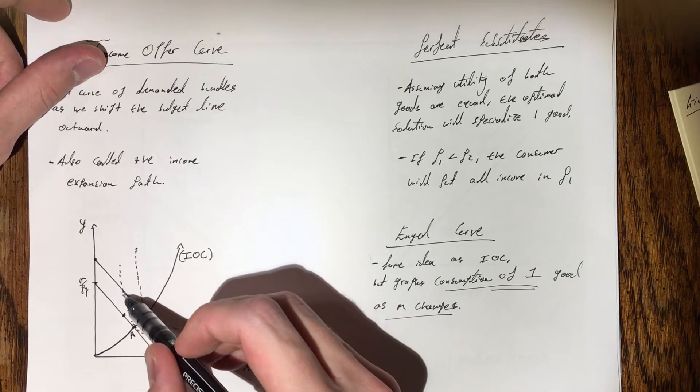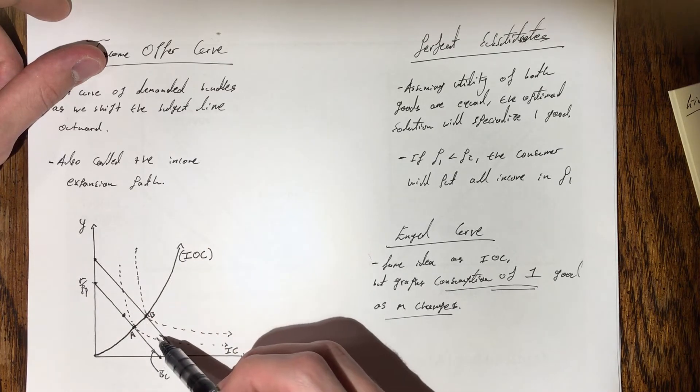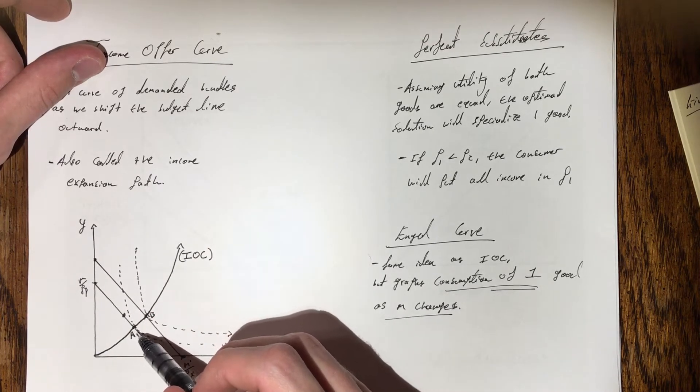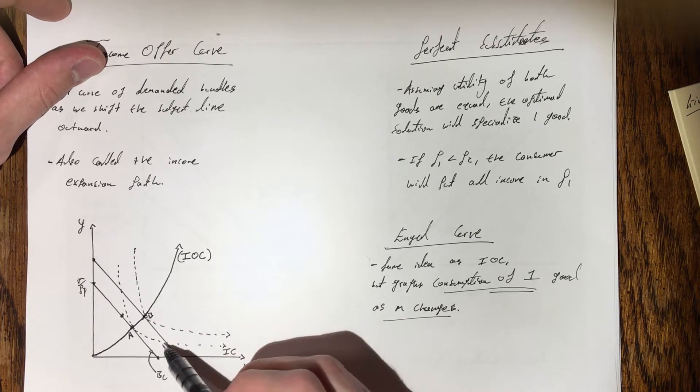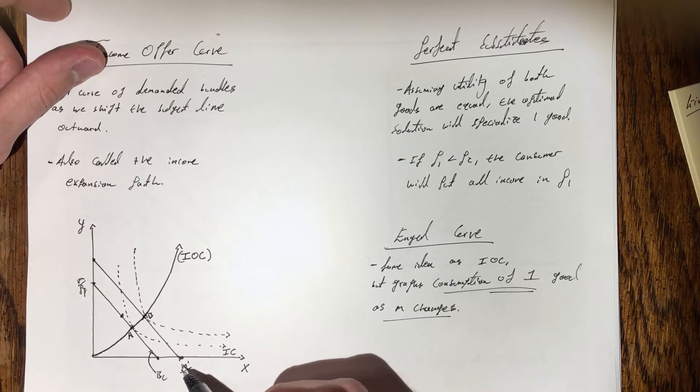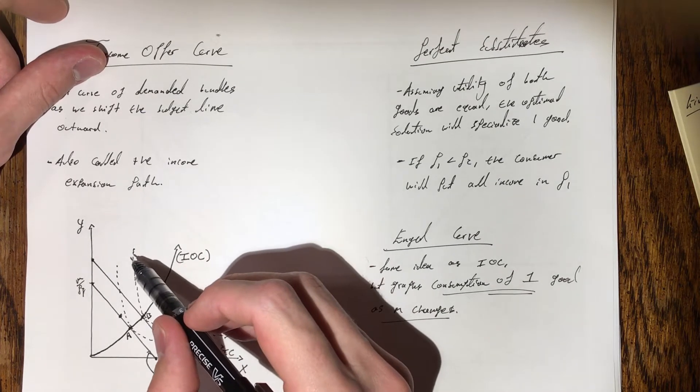And then this is our indifference curve here that has our tangency conditions, so we know A is the optimal bundle. Then we have the second indifference curve here with an income of m prime, which tells us B is our optimal bundle.